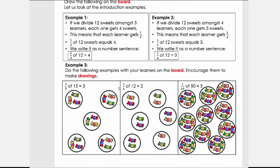With example three, I want the learners, if you're in the classroom, to work in groups or at home. You can work with the child and you're only going to give them one-fifth of 15, one-sixth of 12, and one-tenth of 50.